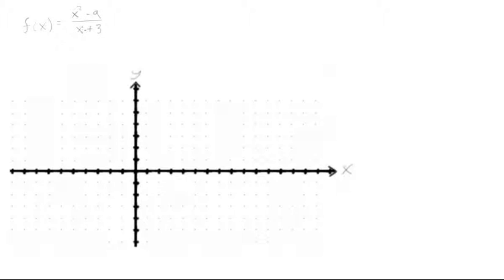So the first thing you should notice here is if we put in an x value of negative 3, we'll get negative 3 plus 3 equals 0, and we'll divide x squared minus 9 by 0, and we can't do that. So right away we know that at x equals negative 3, there can be no values of our function.